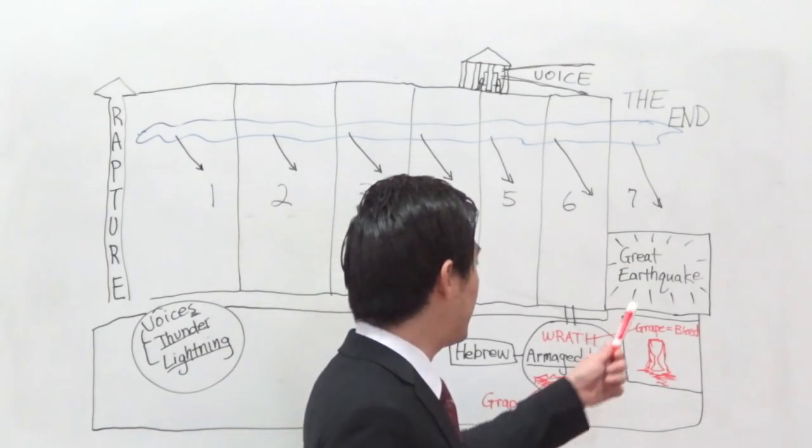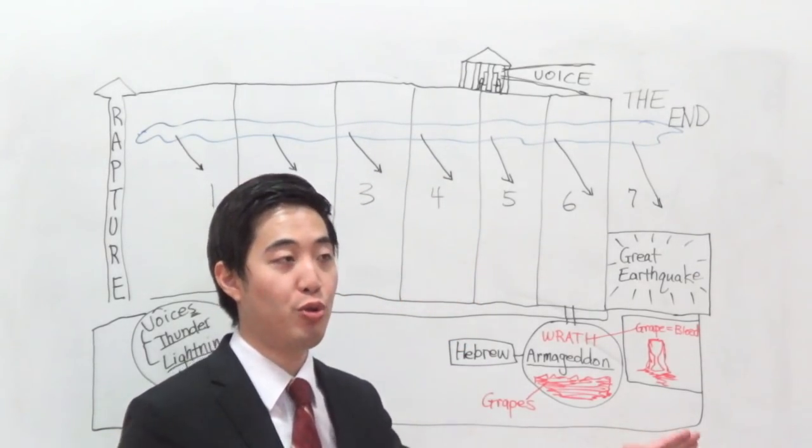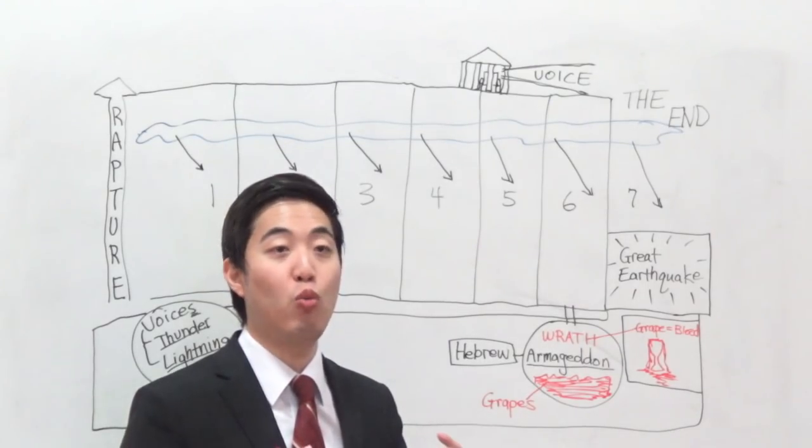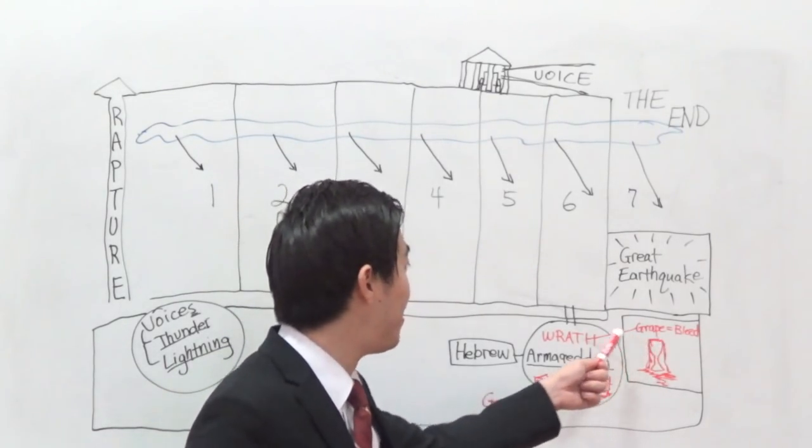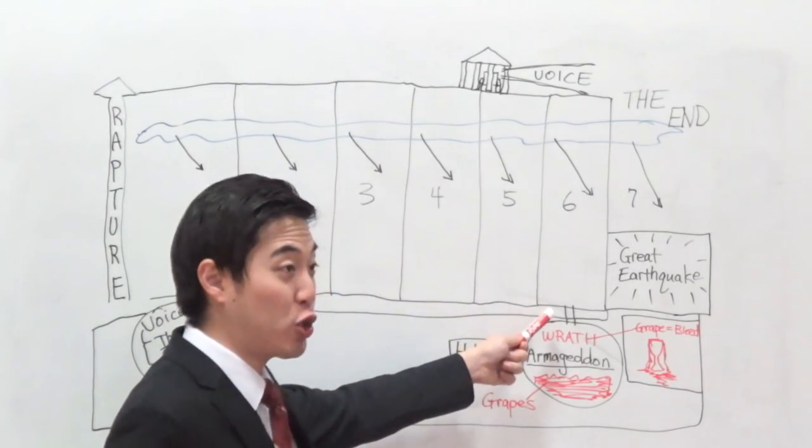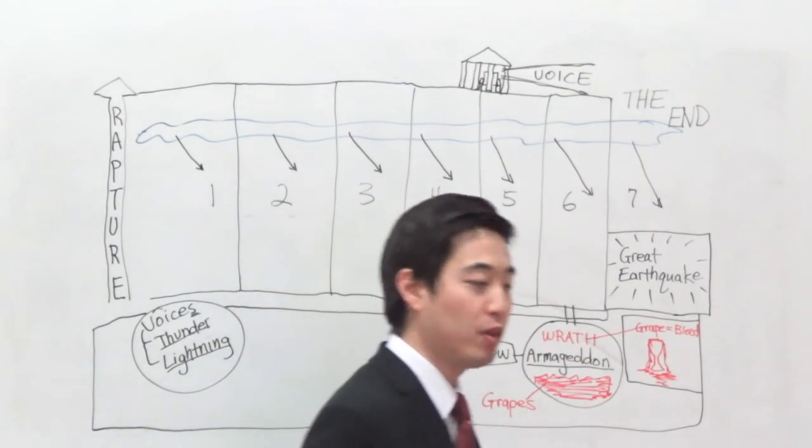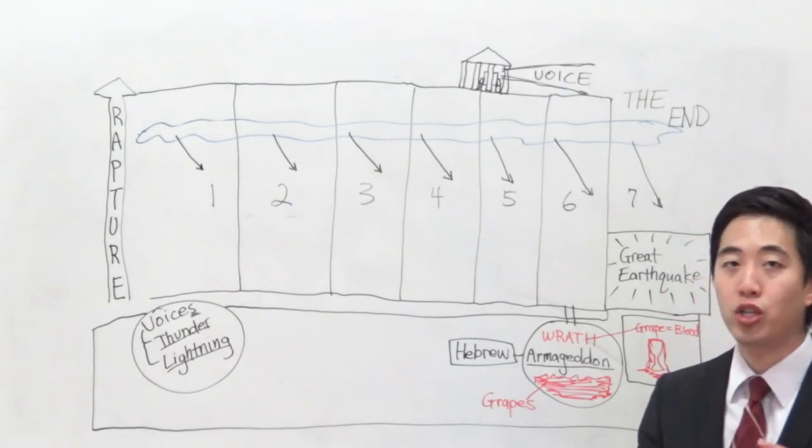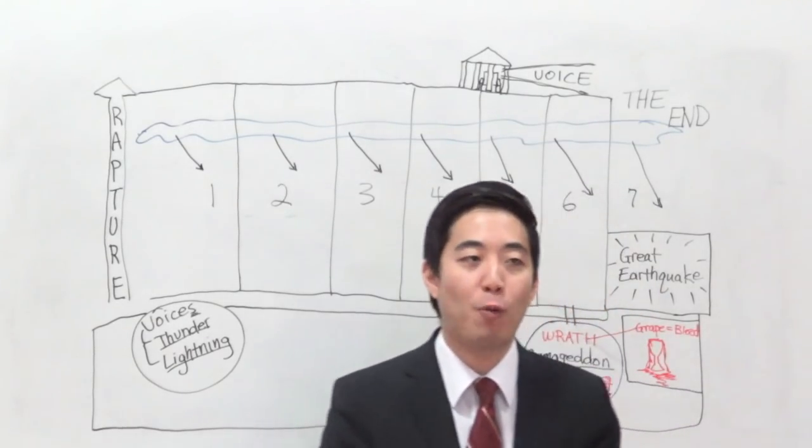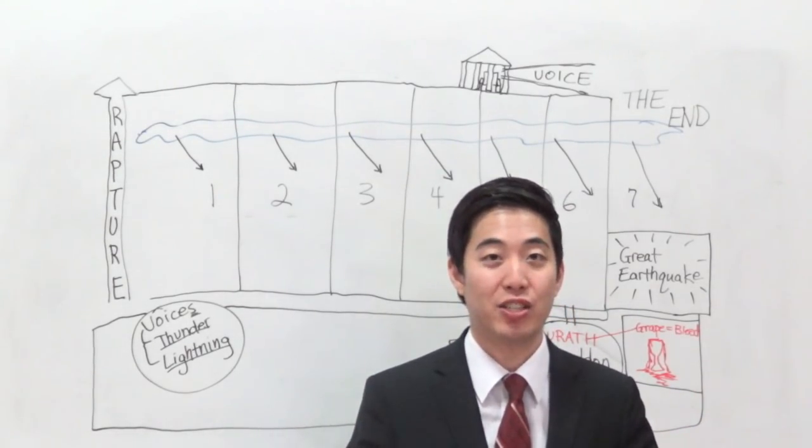Notice over here that there's different wraths. So, post-tribulation people who believe that we will go through the tribulation, the church will go through the tribulation, and the wrath is at the end, they talk about that there is only one wrath. But you'll notice over here that there are different wraths. So, if we already see different wraths, even at a post-tribulation, even at a near-end tribulation timeline, what makes you doubt so many other wraths that have occurred before? So, this is evidence that there is undoubtedly multiple wraths, not just one wrath. Why? Because even for pre-wrathers and post-tribulation people, their own wrath has multiple wraths in it. So, that is undeniable.